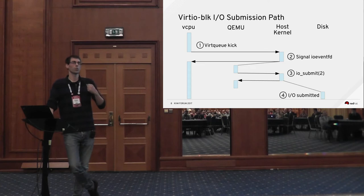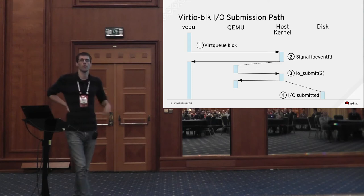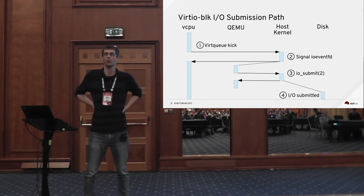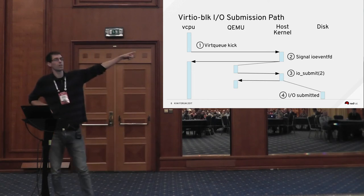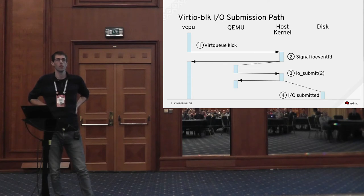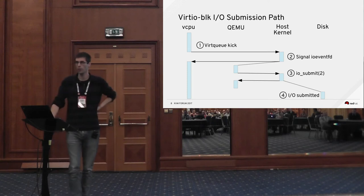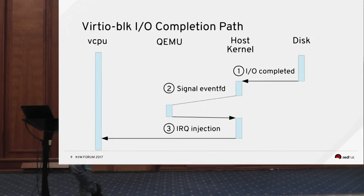Once QEMU runs and grabs the request, for this discussion I'll focus on Linux AIO — the AIO equals native option — because that's usually the most high-performance option for local disks. QEMU will call the Linux AIO IOSubmit system call to submit the IO request on behalf of the guest. Once submitted, eventually the disk will see the request once the Linux kernel block layer has given it to the driver and the driver has given it to the device.